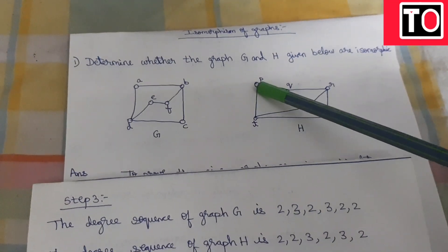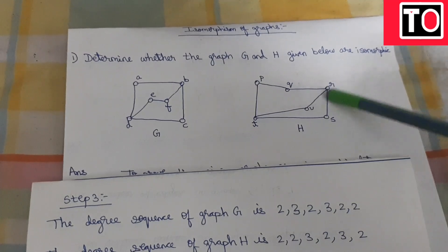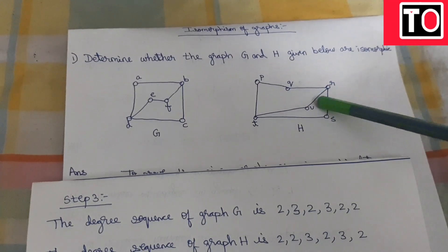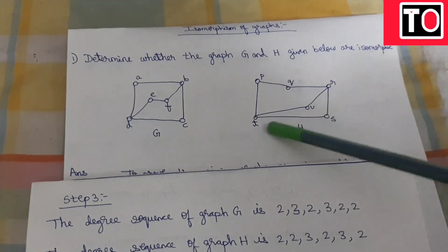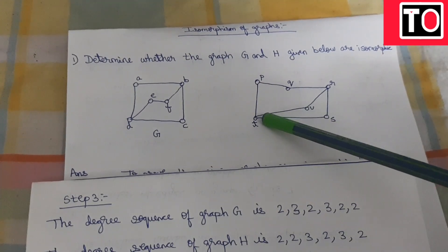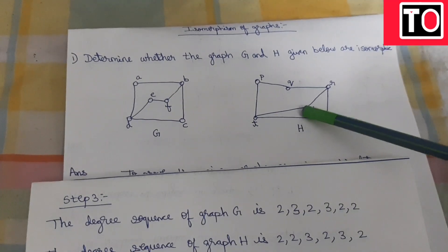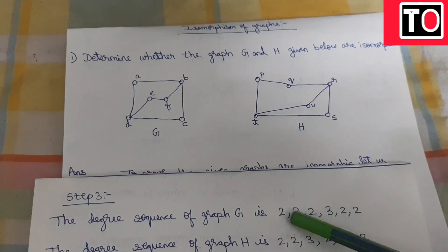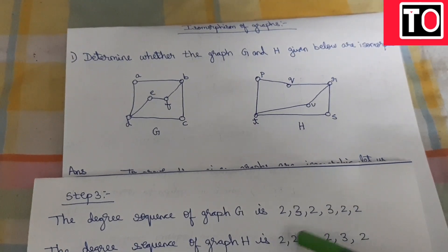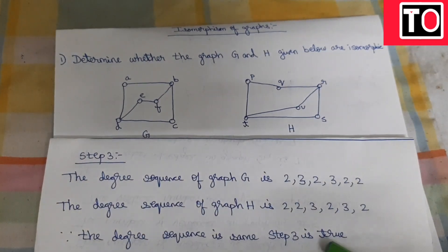In graph H's degree sequence: P is 2, Q is 2, R is 3, S is 2, T is 3, U is 2. The degree sequence is the same — four vertices of degree 2 and two vertices of degree 3. Since the degree sequences match, Step 3 is true.